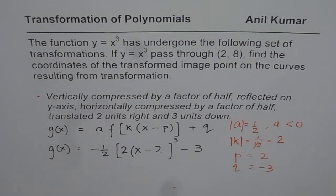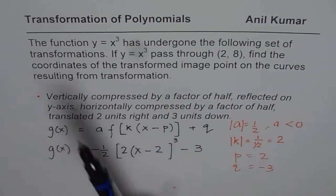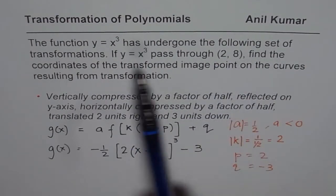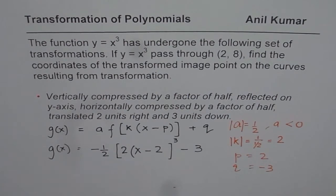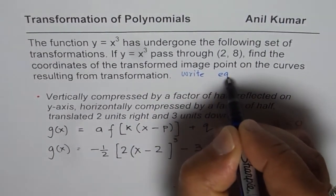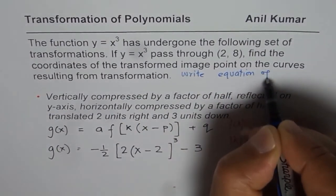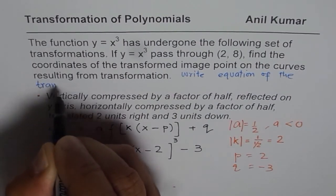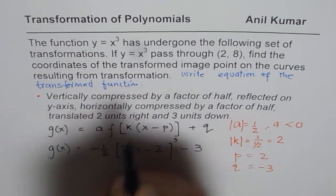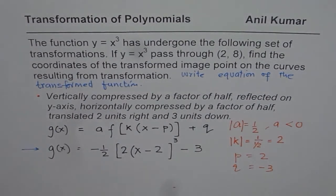I'd like you to sketch this function and then also see how the points change. Now let's get back to the question once again. This function has undergone the following set of transformations. If y = x³ pass through (2, 8), find the coordinates of transform function. Now whatever I wrote here is just to explain you to get the equation. It could be: write equation of the transformed function. And this is the equation. Now let us concentrate on the equation itself.